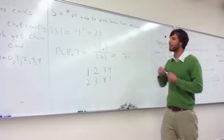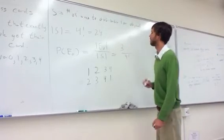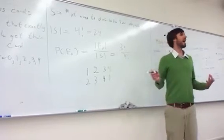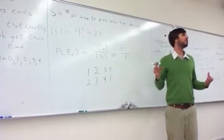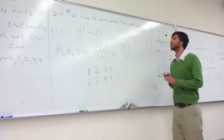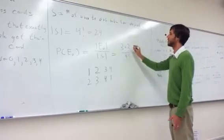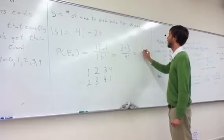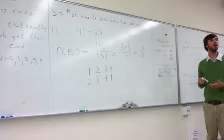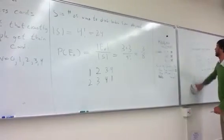So if you think about it, how many ways would there be for person one to not get their own card? Well, there would be three. And once person one has chosen, whoever's card they choose, that person would also have three choices. So the total number of ways in which no one chooses their own card is just three times three, which would be nine. And if you simplify nine over 24, it's three over eight. So that's how you would argue E-naught using counting arguments.